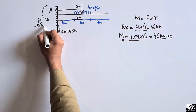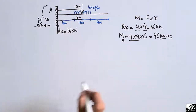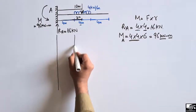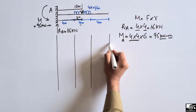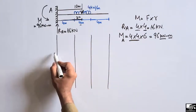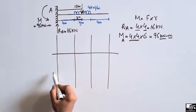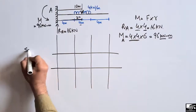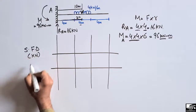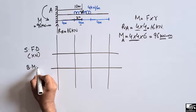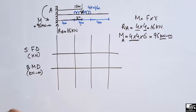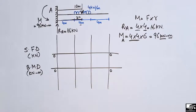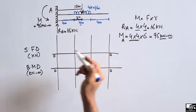Now to draw the shear force and bending moment diagram, let's set up the reference lines for this cantilever beam. This reference line is for the shear force diagram in units of kN, and this reference line is for the bending moment diagram in units of kN·m. These reference lines represent zero.